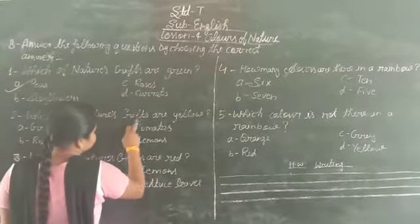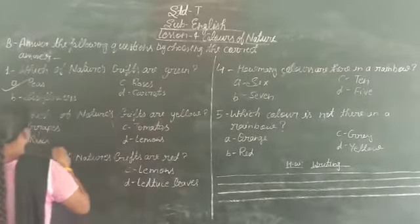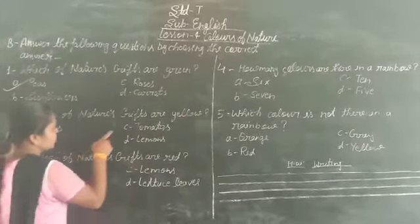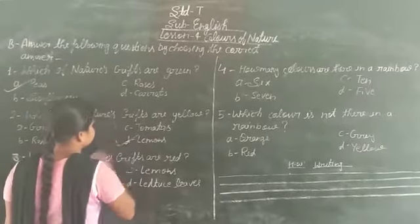Second, which of nature's gifts are yellow? Yellow colors are crabs, roses, tomatoes, and lemons. Lemons.